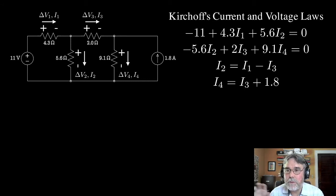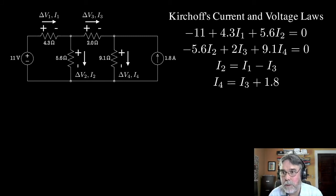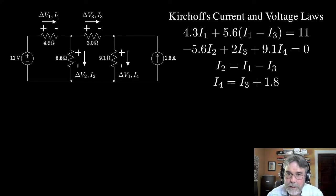I2 is I1 minus I3. I can also write I4 in terms of I3 and the current source is 1.8. And once I have that, now I can go up into the top two equations and we can get rid of I2 and I4 by substituting in these expressions. So for example, in that top equation, I can replace I2 with I1 minus I3. I can move the 11 to the other side.